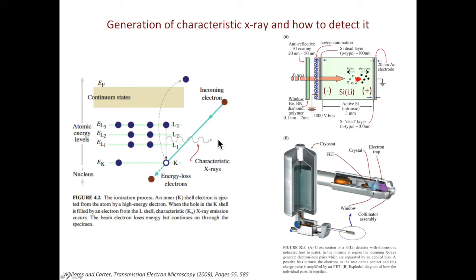Because the energy level for each shell of electrons is characteristic, the energy difference will also be characteristic. Thus, by looking at the energy of X-ray emitted, we can identify which elements we have in the material.